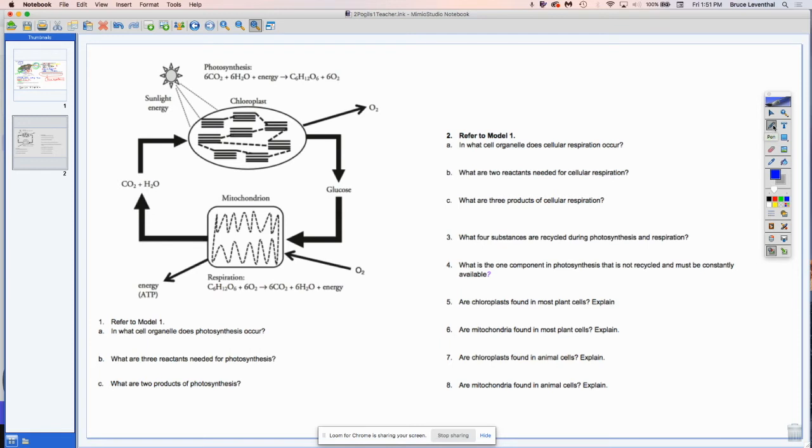In what cell organelle does photosynthesis occur? So we can see that's happening in the chloroplast. And I will circle the chloroplast in green. And what are the three reactants needed for photosynthesis? So again, this is just repeating what we had done before. I sometimes use NRG and smoosh them together to say energy. What are the two products of photosynthesis? Here we are talking about glucose, so sugar, and we are talking about oxygen.